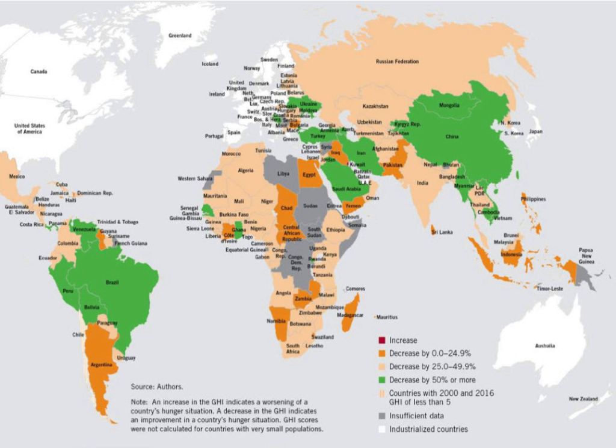It then ranks countries by GHI score and compares current scores with past results. The 2018 report shows that in many countries and in terms of the global average, hunger and undernutrition have declined since 2000. In some parts of the world, however, hunger and undernutrition persist or have even worsened. Since 2010, 16 countries have seen no change or an increase in their GHI levels.